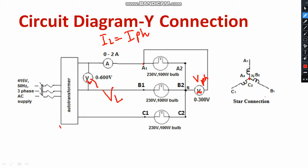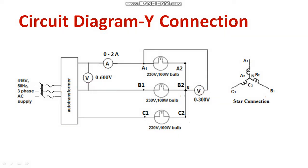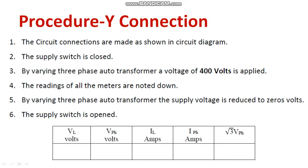We have the auto transformer. With the help of the auto transformer you can apply a certain line voltage, and you can measure the phase voltage and the line current and phase current — this ammeter gives both line current and phase current. Star connection is mainly used for high voltage low current applications.